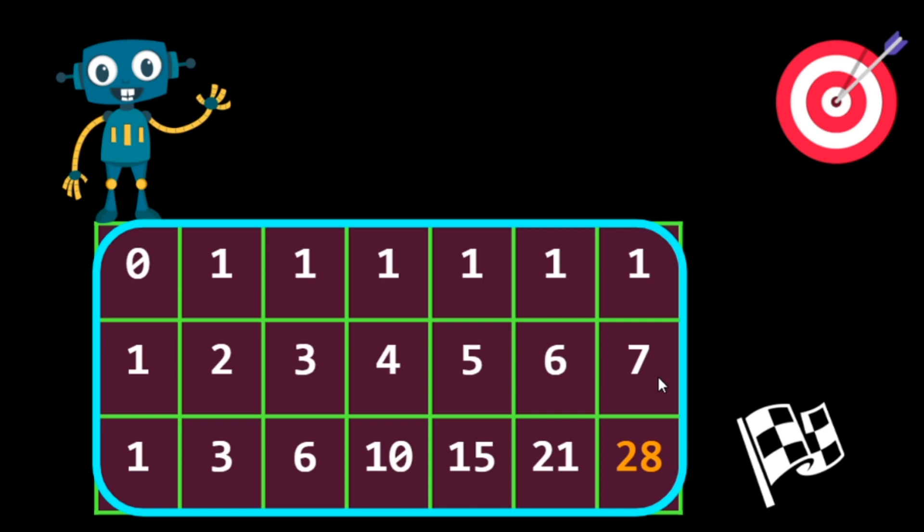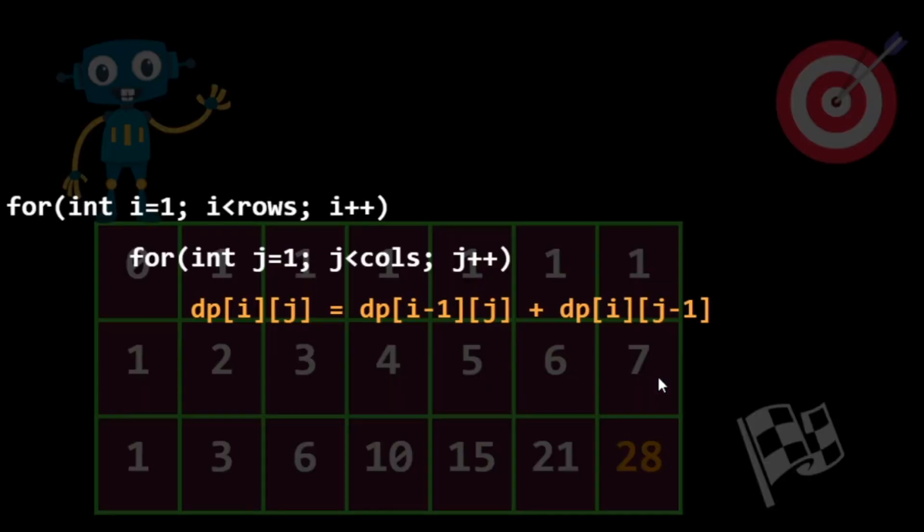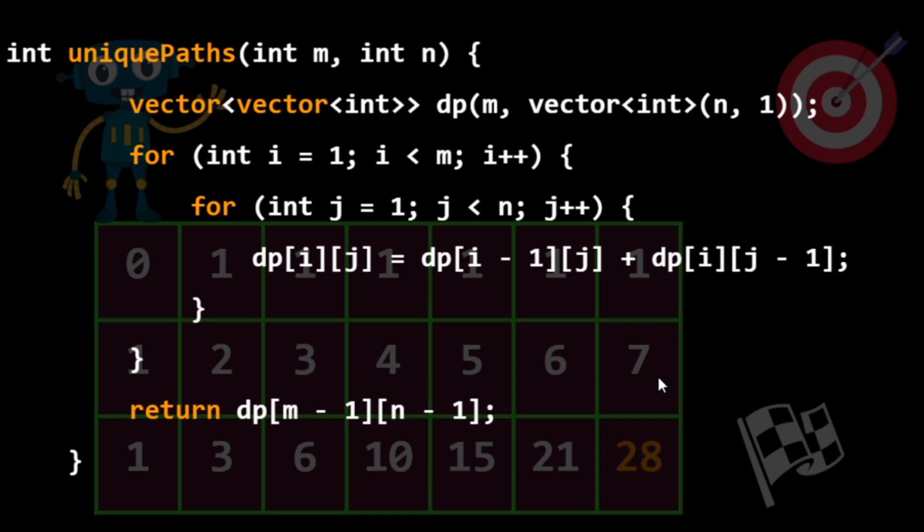So we have done it easily using our 2D array and we are just calculating the value of previous right and top cell. So here's our code for the question, but can we also do it in efficient space? So yeah, let's see.